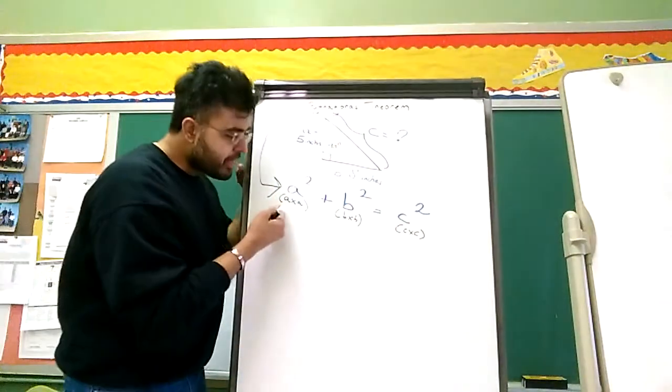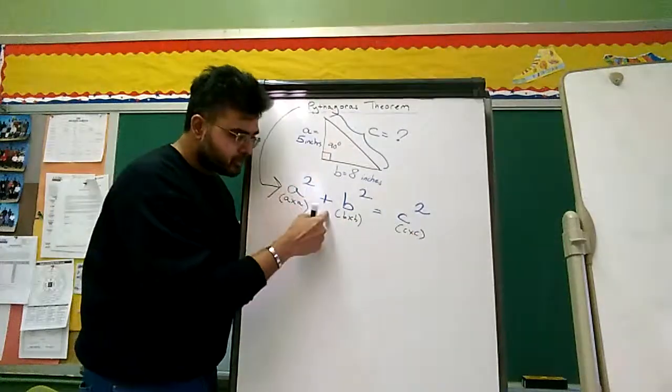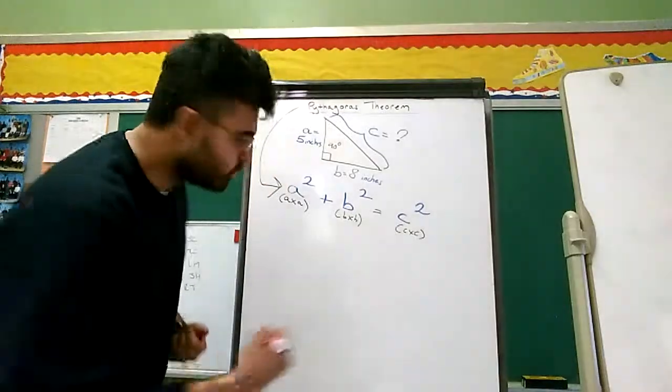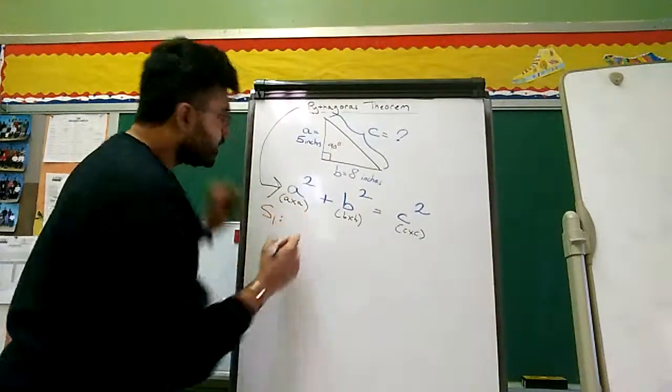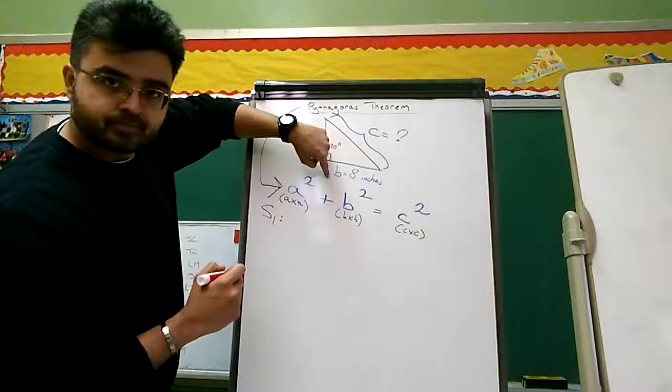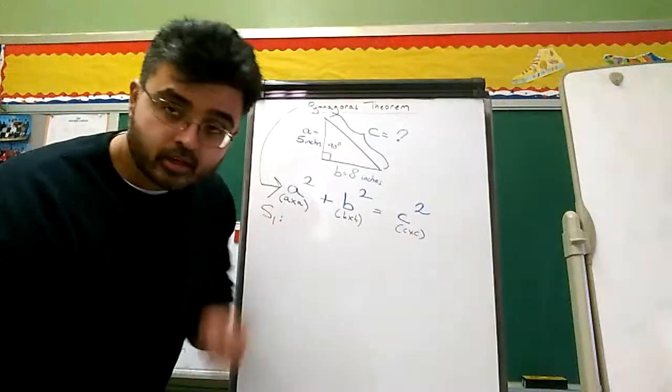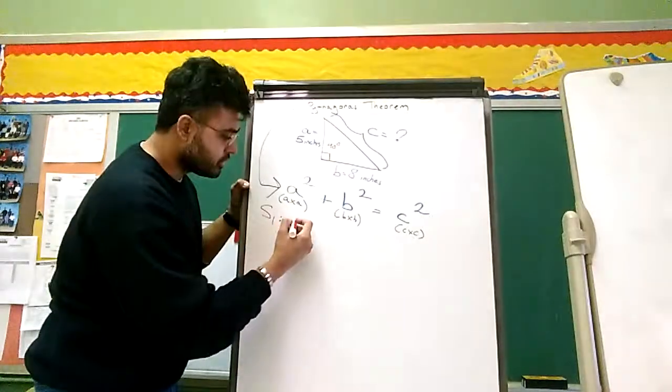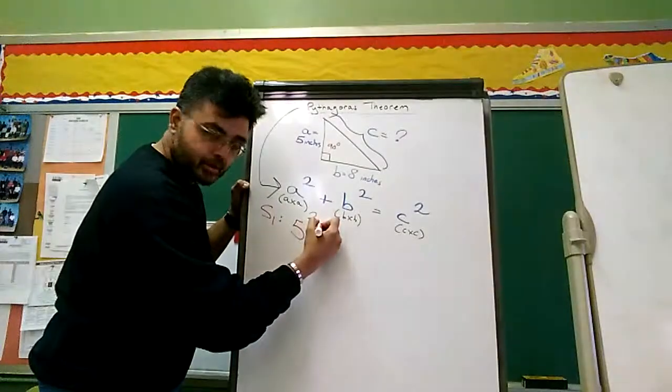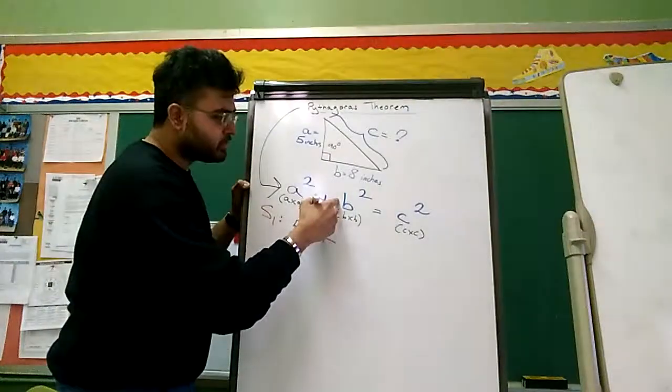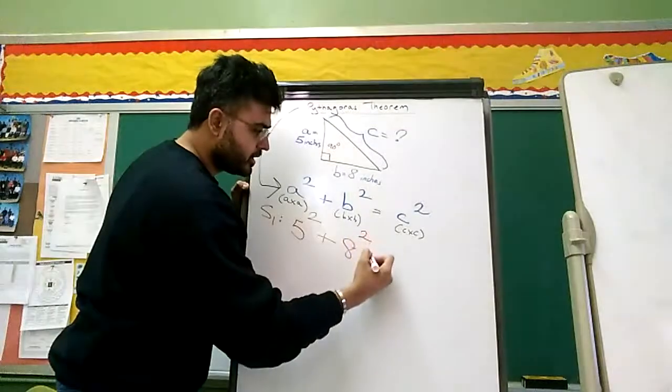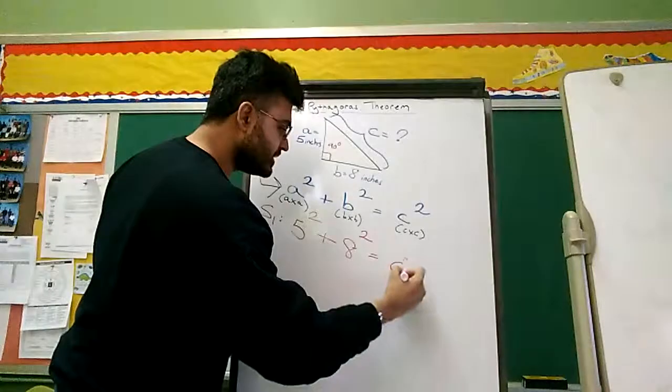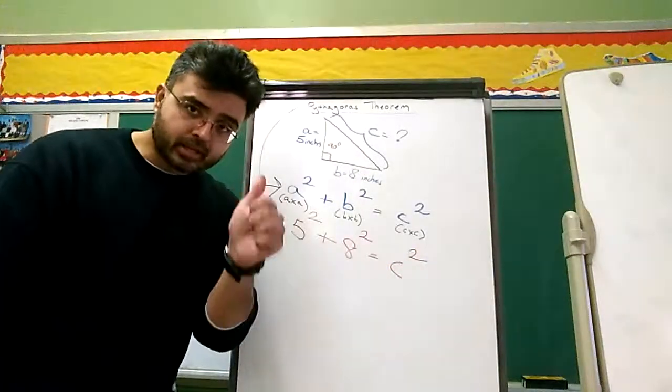We're going to use the Pythagoras Theorem: A squared plus B squared equals C squared. So first, step one, you're going to take these numbers and plug them in. What is A equal to? A is 5. So 5 squared plus, what's B equal to? 8. 8 squared. What's C equal to? I don't know. That's what you have to find out. So let's leave it C squared. Step number one: plug it in.